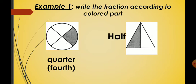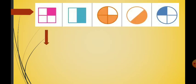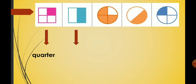Very good, Grade 1. Write the fraction — the colored part is called quarter. Write the fraction — half. Good. Write the fraction: the colored parts are three quarters — quarter, quarter, quarter. Three quarter.